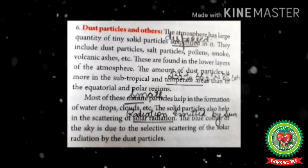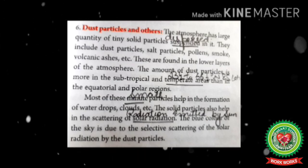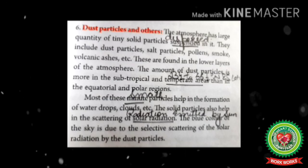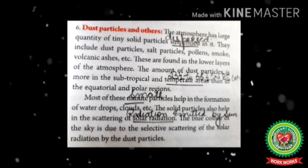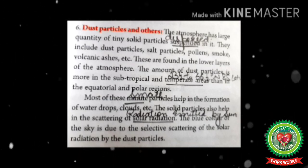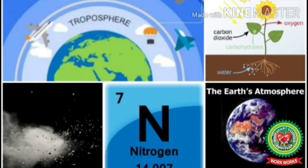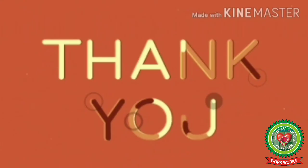Solid particles also help in scattering solar radiation in the form of red or blue color at the time of sunrise and sunset. Especially, the blue color of the sky is due to the selective scattering of solar radiation by dust particles. With this we are ending the topic for today. Please revise the topic and do the related question answers. Thank you.